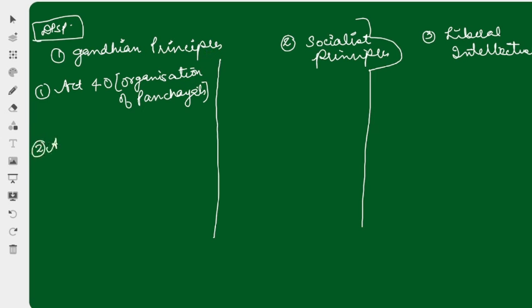Second is Article 43, related to cottage industries. What are cottage industries? Basically, when you start small work from home — cotton weaving, carpet making, metal handicraft toys, or small food processing units run from home. That's also a Gandhian thought, that's why it falls under Gandhian principles.